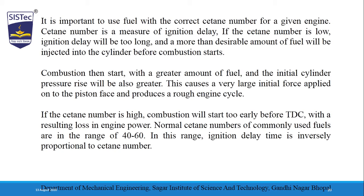Normal CTN numbers for commonly used fuels are in the range of 40 to 60. In Indian operations, we normally use around 60 to 70 CTN. In this range, ignition delay time is inversely proportional to CTN number.